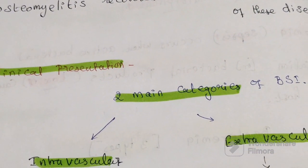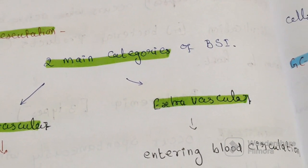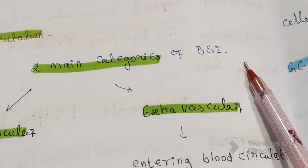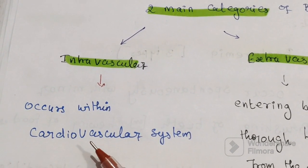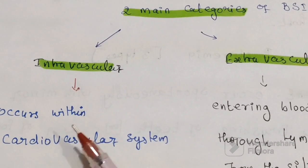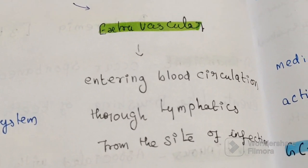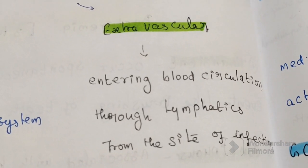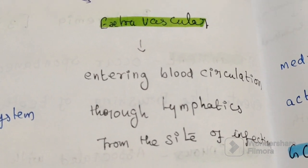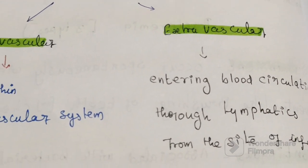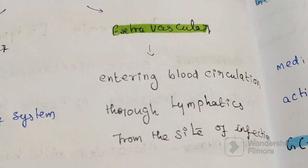Next, coming to the clinical presentation of bloodstream infection. There are two main categories: intravascular and extravascular. Intravascular infections occur within the cardiovascular system. Extravascular infections are those entering blood circulation via lymphatics from the site of infection.